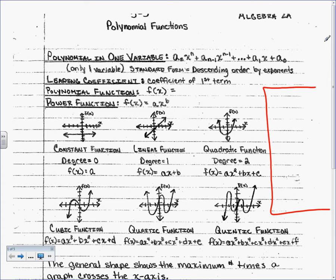A polynomial in one variable is literally a polynomial in one variable. If you have more than one variable — now when I say one variable, I mean y equals doesn't count. This is a polynomial in one variable. If it's not in one variable, then it's not a polynomial in one variable. Standard form is descending order — we've talked about that the whole chapter. Leading coefficient is the coefficient of the first term if it's in descending order — it's the one in the front. Polynomial function f of x is really y.